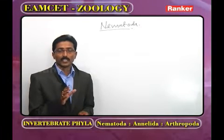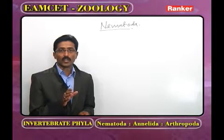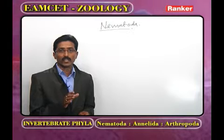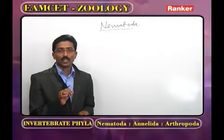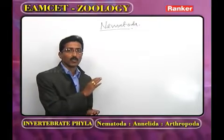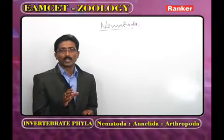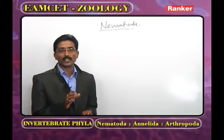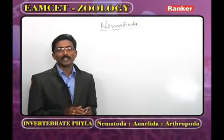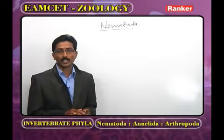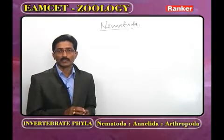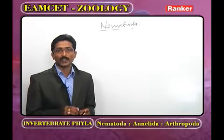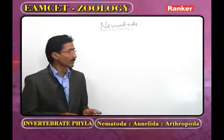Important characters of Nematoda: the body is covered and protected by cuticle, which is mainly made of collagen. This collagenous cuticle is present only in Nematoda. In Nematoda, the majority of animals are unisexual — male and female are separate. Only one animal is bisexual, and that is seen in Oxyuris.